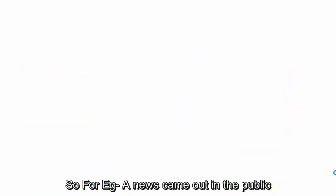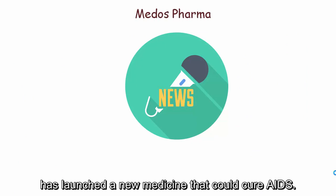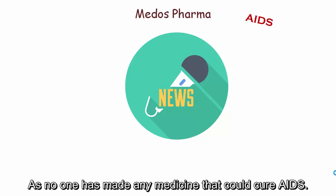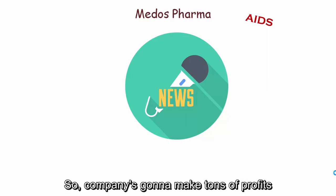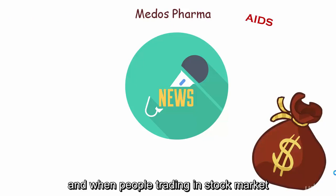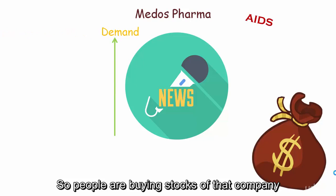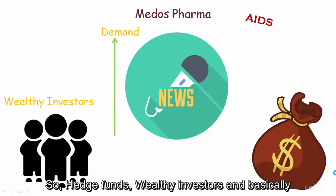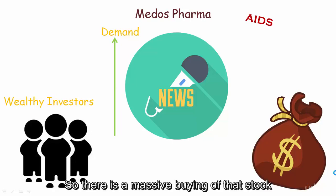Let me explain with an example. A news story came out that a new company called Mesos Farmer launched a new medicine that could cure AIDS. This is truly breaking news, as no one has ever made a medicine to cure AIDS — it's a revolutionary product. The company is going to make tons of profits. When people trading in the stock market heard this news, demand for that stock increased tremendously, with hedge funds, wealthy investors, and all the big players massively buying the stock.